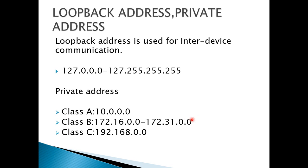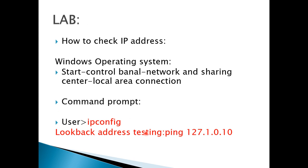For class B, the private address range is 172.16.0.0 to 172.31.0.0. For class C, the private address range is 192.168.0.0.